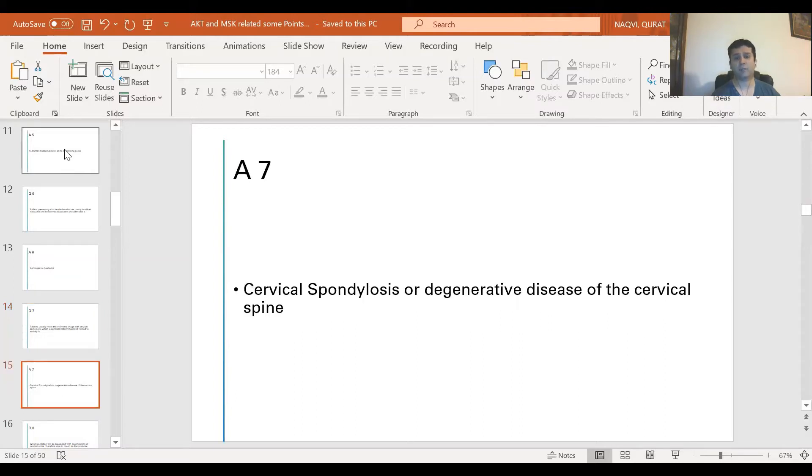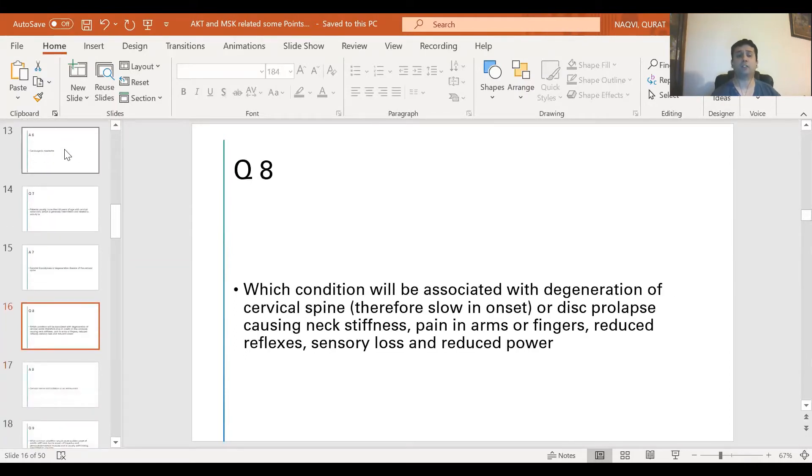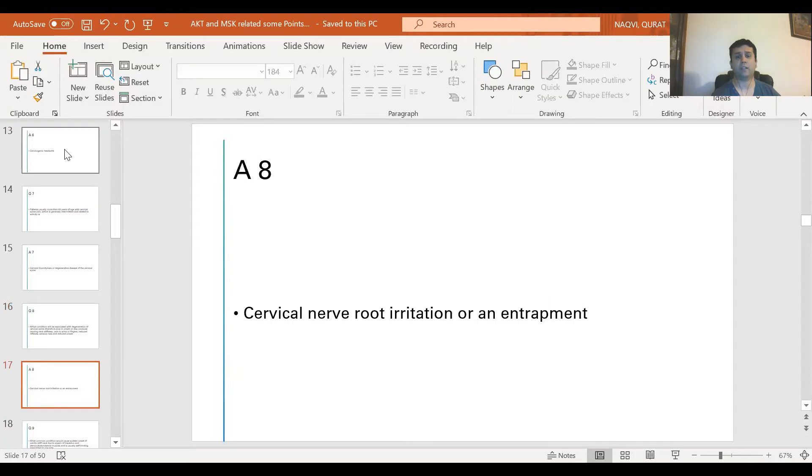Question 8: Which condition will be associated with degeneration of cervical spine or disc prolapse causing neck stiffness, pain in arms or fingers, reduced reflexes, sensory loss, and reduced power? The answer is cervical nerve root compression or cervical radiculopathy.